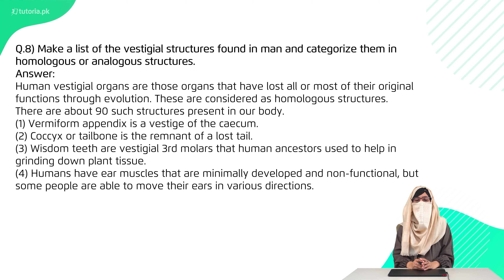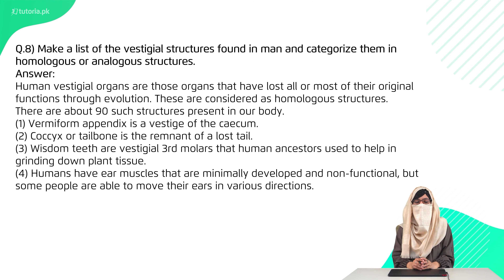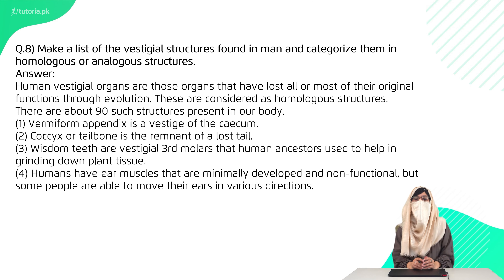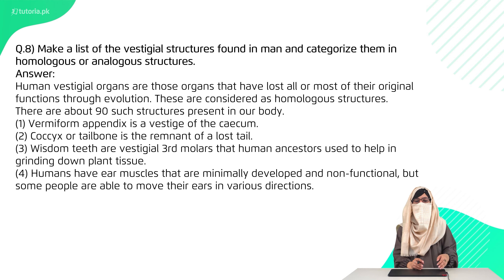Question 8 is: make a list of vestigial structures found in humans and categorize them as homologous or analogous organs. For homologous organs: the appendix is a vestigial of the cecum, then the coccyx or tailbone, wisdom teeth, and ear muscles. Before, mammals could easily move their ears, but now humans use the neck to look around, so our ear muscles have degenerated.